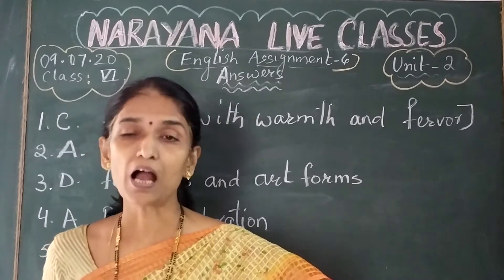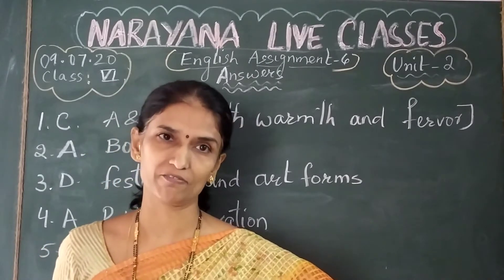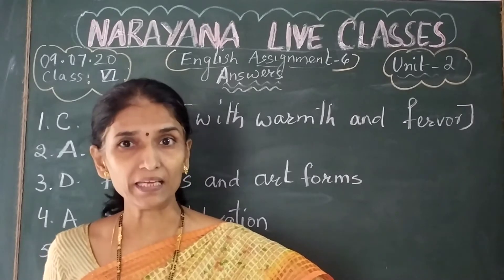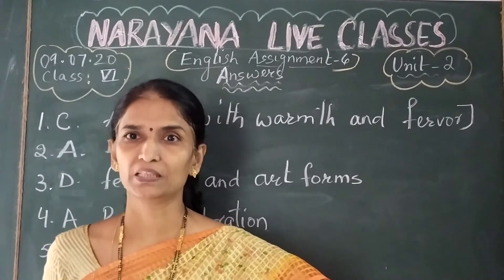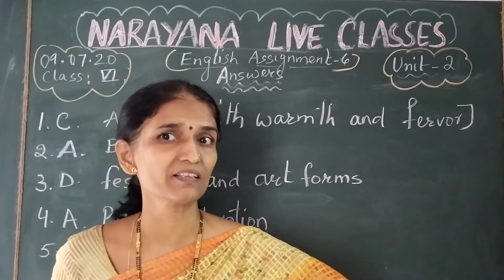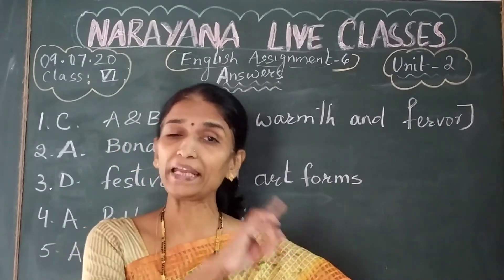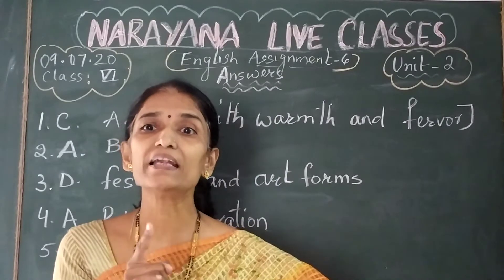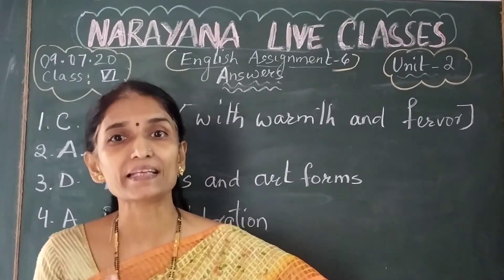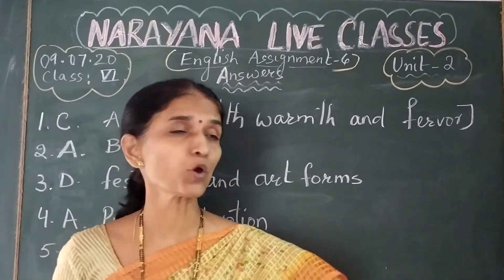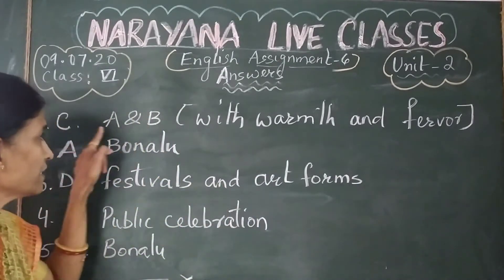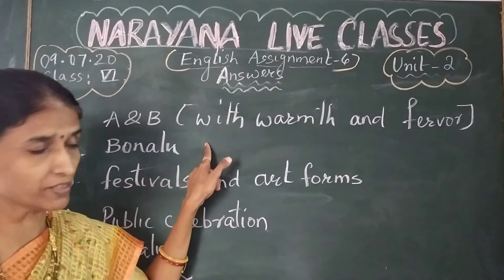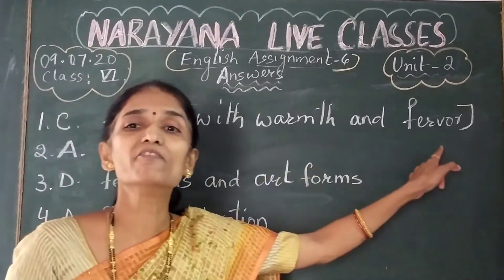The first question is: how do we celebrate our festivals? Option A is 'with warmth', option B is 'with fervor', option C is 'both A and B, that means with warmth and fervor', and option D is 'with anxiety'. The right option is C, which is both A and B. So we celebrate festivals with warmth and fervor.